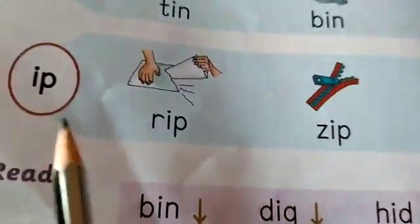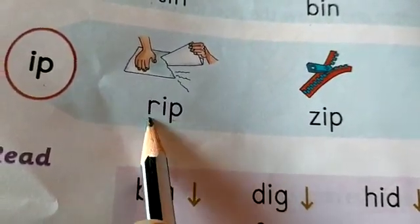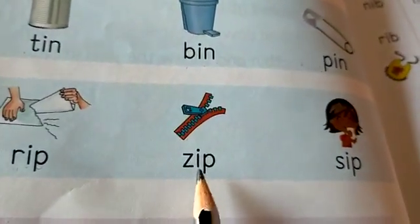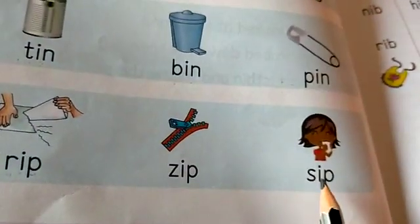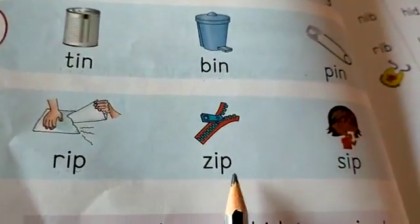Next is I p. With I p. R I p, rip. Z I p, zip. S I p, sip. Rip, zip, sip.